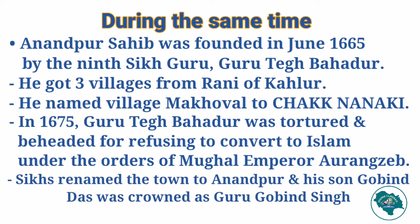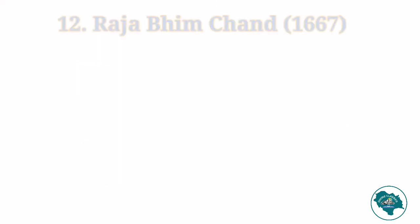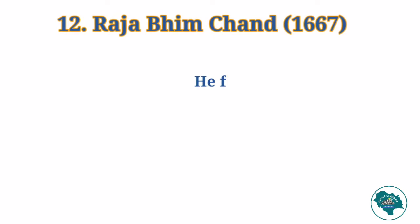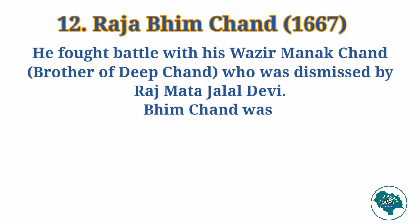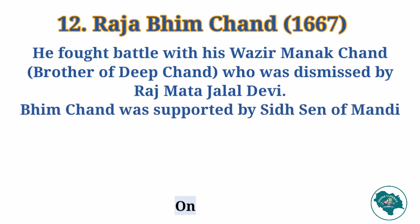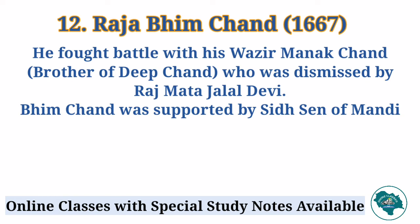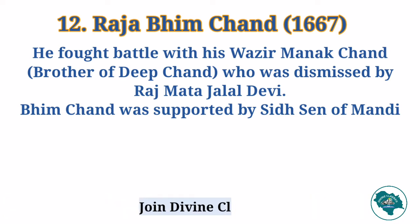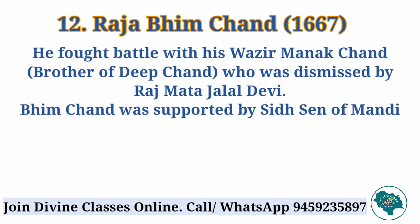This martyrdom led the Sikhs to rename the town Anandpur and crown his son Gobindas as his successor, famous as Guru Gobind Singh. At this time came Raja Bheemchand in 1667. He was a minor when his father Deepchand died. He fought a battle with his Vazir Manak Chand, brother of Deepchand, who was dismissed by Raj Mata Jalal Devi from the post of Vazir. Bheemchand was supported by Siddh Sen of Mandi. Raja Deepchand had two Ranis — one from Mandi named Jalal Devi and another from Kullu named Kumkum Devi. There was a rumour that the Mandiali Rani wanted to get the daughter of Kullu Rani married to her brother, the Raja of Mandi.